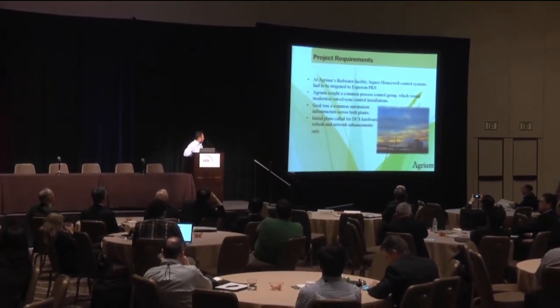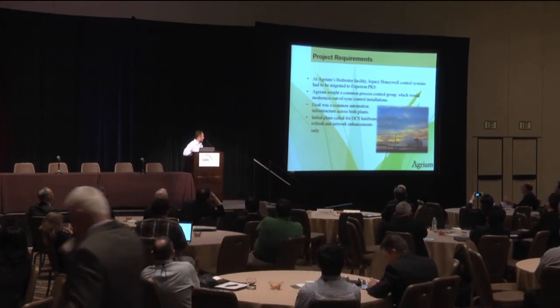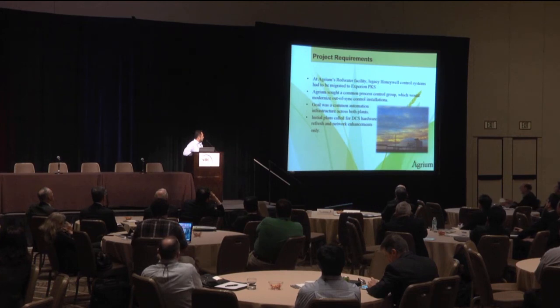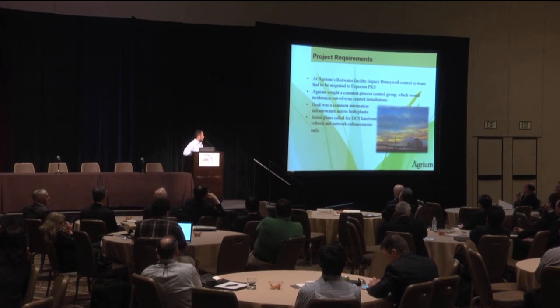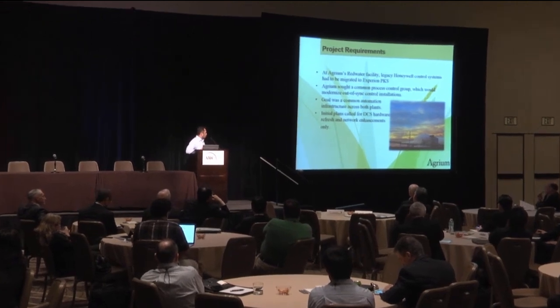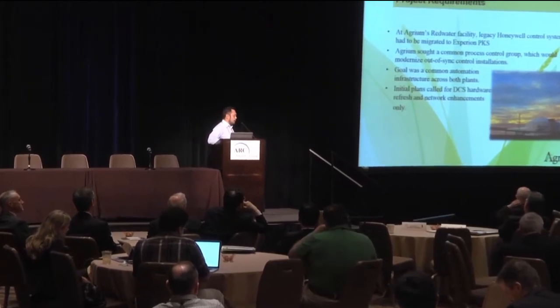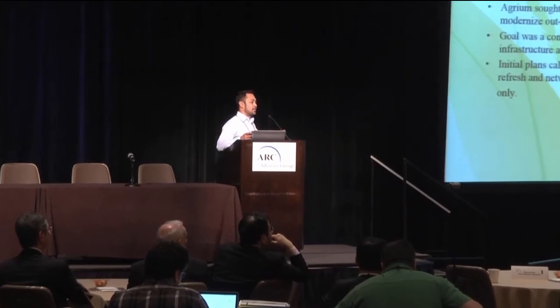About two years ago, the process control group was set to modernize and upgrade the legacy control systems from Experience 3.10 to Release 4.10. We also asked to build a team to modernize the out-of-sync installation. The main goal for this project was to have a common infrastructure, because we have two plants — before, each plant operated independently with no sharing of data at all. The initial plans were really just for a hardware refresh, since the hardware was old and everything needed replacement, including the switches and routers.